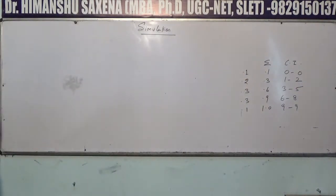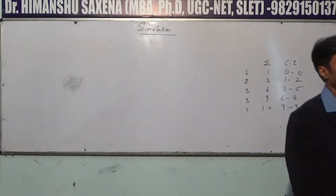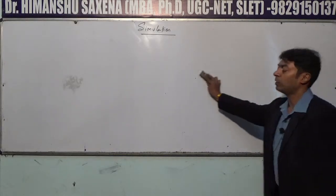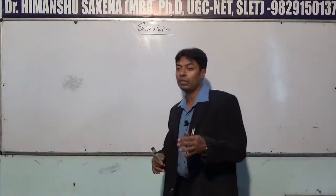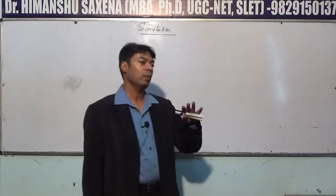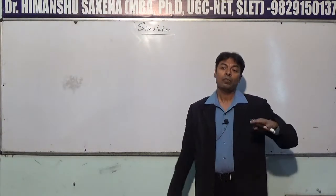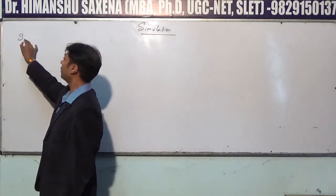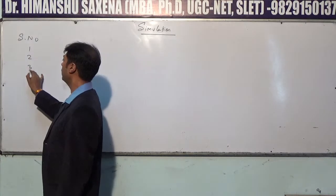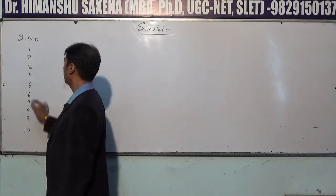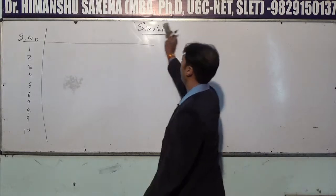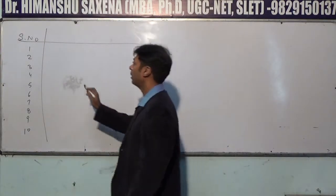If you read the question, it says to repeat the process 10 times. Although you have 15 or 16 random numbers listed, since the process is repeated only 10 times, you select only the first 10 random numbers. The serial number column will go from 1 to 10, and the first 10 random numbers are: 0, 9, 1, 1, 5.